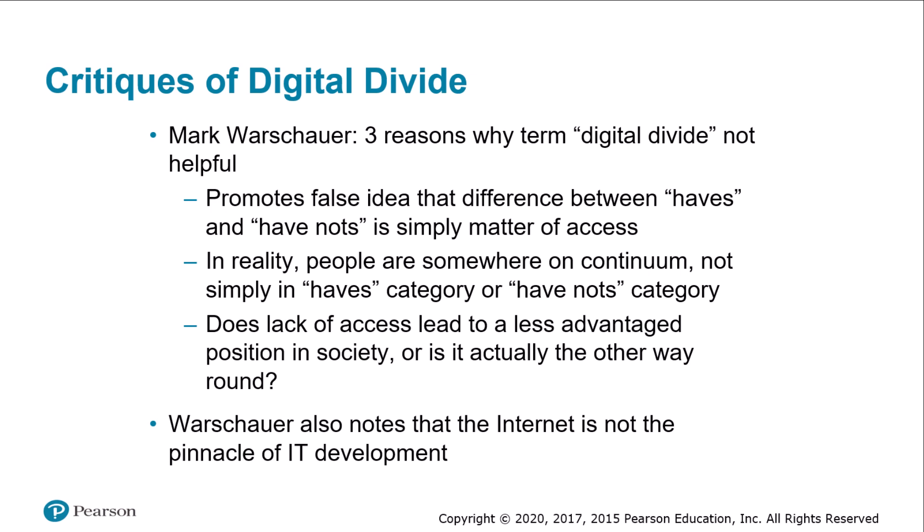Third, Warshower says the term implies that a lack of access leads to a less advantaged position in society, but models of technological diffusion show the causality can go the other way — those with a less advantaged position tend to adopt new technologies later. In reality, causality flows in both directions, each factor affecting the other. Finally, Warshower points out that the internet does not represent the pinnacle of information technology; dramatic new technologies will emerge in coming decades and will also be adopted at different speeds.